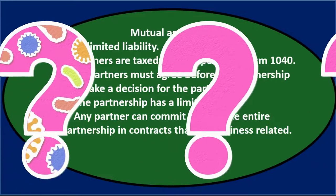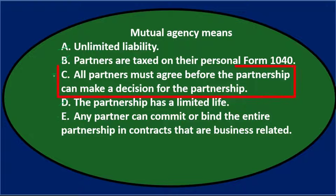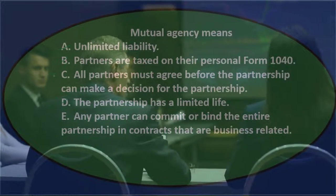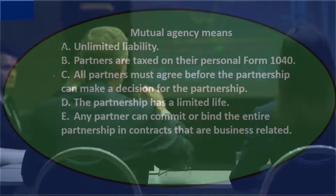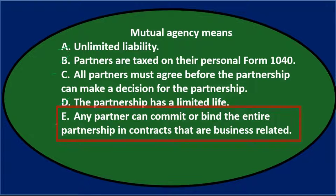The real question is how big a decision needs to be before it requires a committee of partners. If you have more partners, it becomes a problem to have everybody get together for every little decision. So E is the correct answer: mutual agency means any partner can commit or bind the entire partnership in contracts that are business related.